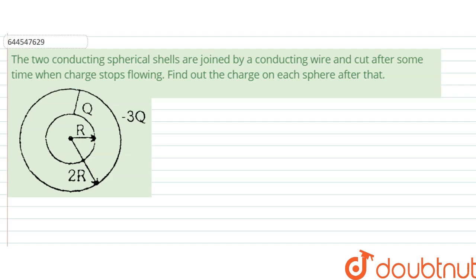The question says that two conducting spherical shells are joined by a conducting wire and cut after some time when charge stops flowing. Find out the charge on each sphere after that.